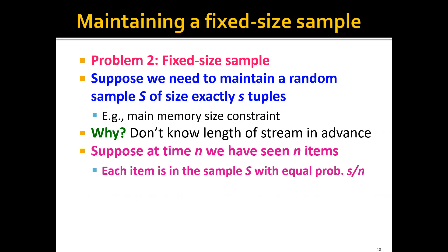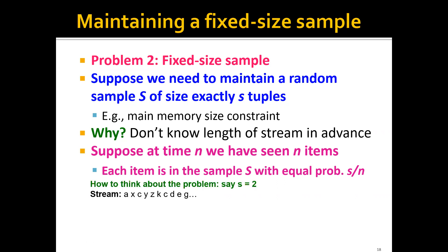So let's suppose that at time n, we have seen n items. We want that each item would be in the sample S with equal probability S over n. To think about this concretely, let's say the sample size S equals two, and we have the data stream as follows: A, S, C, Y, et cetera.